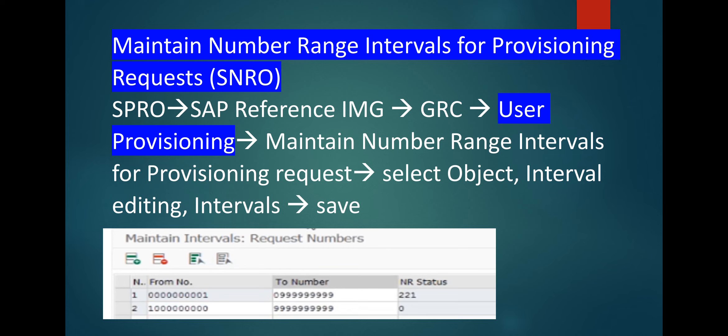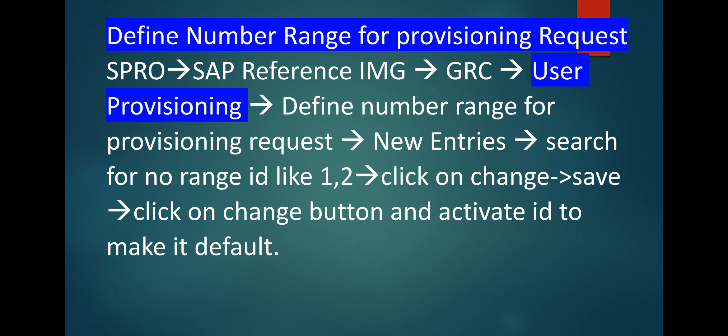Next, go to user provisioning > Maintain Number Range Intervals for Provisioning Request, or directly you can execute transaction SNRO — you will get the same dialogue. Select object, interval editing, intervals, and save it. Next is define number range for user provisioning. Go to user provisioning > Define Number Range for User Provisioning, click on new entries, search for number range like 1 or 2, click on change, save, click on change button, and activate the ID to make it default.